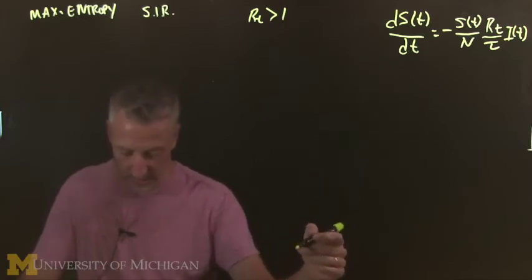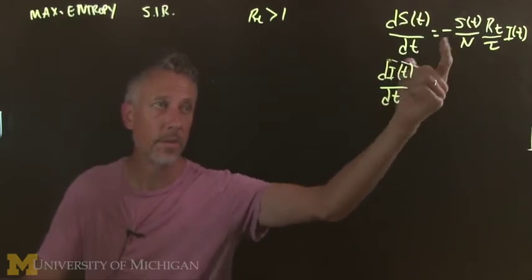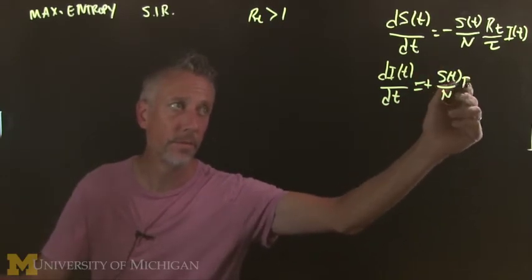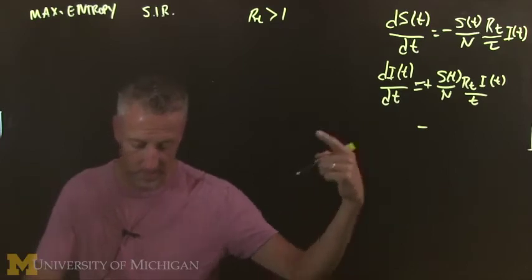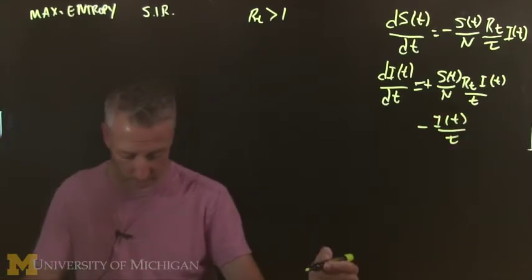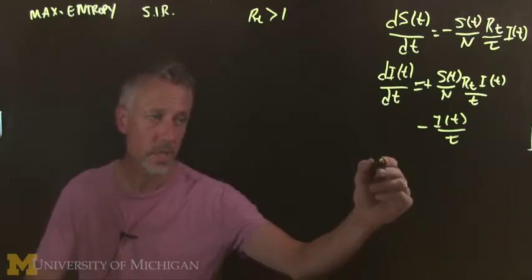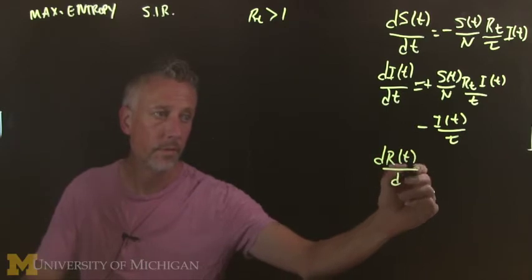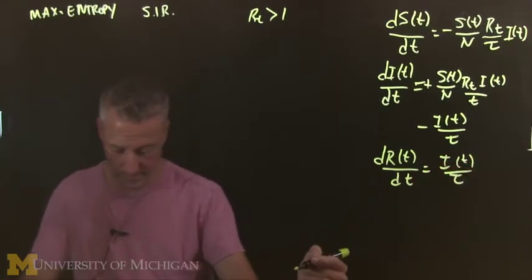That's dS/dt, so the rate of change of the susceptibles. dI/dt, remember there's going to be two terms for this one. The positive version of this one, because we're gaining every time we lose a susceptible. And then we're also going to lose because of the infectious people get removed, eventually. And in this model, they're using the same tau for both of these things. And here we have dR/dt, and that's equal to the positive version of that.